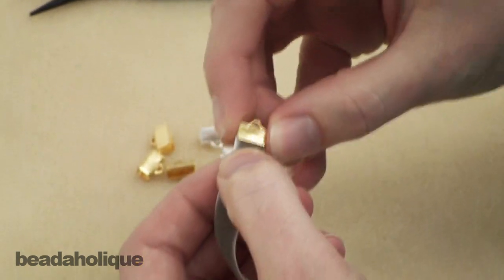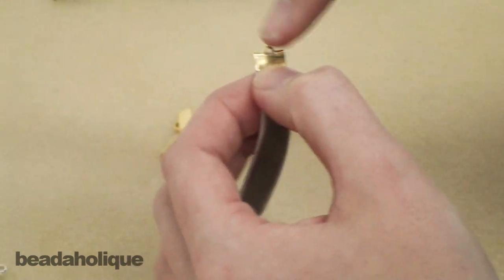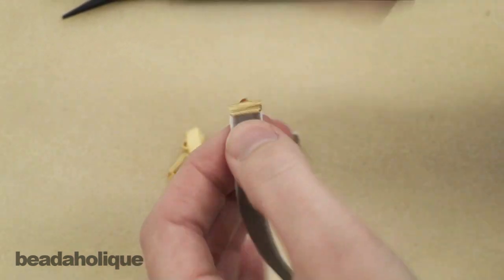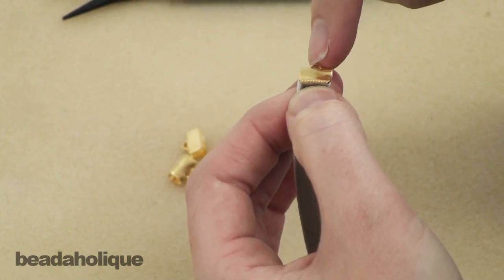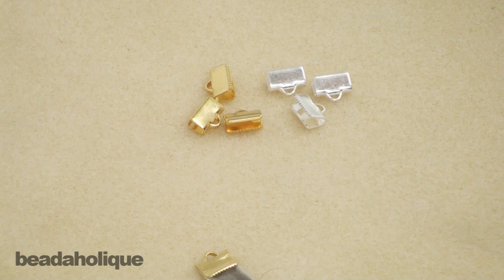And that is all there is to it and then you can use the loop to attach your ribbon to something else. So not only does it give you a nice finished look and give you a way to attach stuff easily, it also keeps the edges from fraying. They're really handy if you like to work with ribbon.